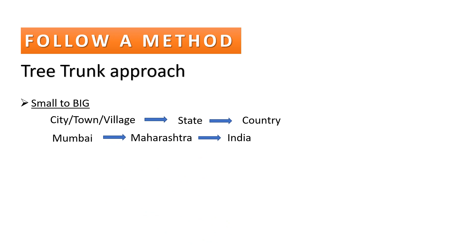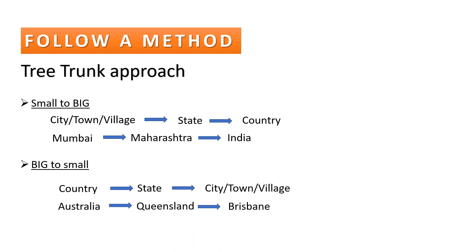You can start from small to big — that is, start from your town, village, or city, then say which state it is in, and then say which country. For example: 'I live in Mumbai, which is the capital of Maharashtra, and it is in India.' You can also give direction — northern, southern, eastern, western, or central India. The other approach is big to small: start with the country, then come to the state, then the city. For example: 'In Australia, I live in a state called Queensland, and in Queensland I live in Brisbane city.'